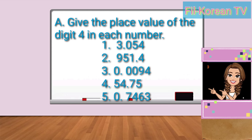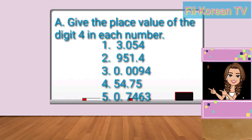Okay, here are the correct answers. Number one: thousands. Number two: tenths. Number three: ten-thousandths. Number four: ones. Number five: hundredths.